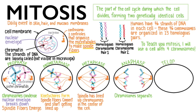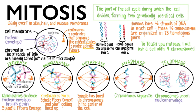Telophase shows the chromosomes far apart on opposite sides of the cell. Telo means far. The strands of DNA uncoil. The nuclear envelope reforms. The nucleolus reappears. And the spindle breaks down.